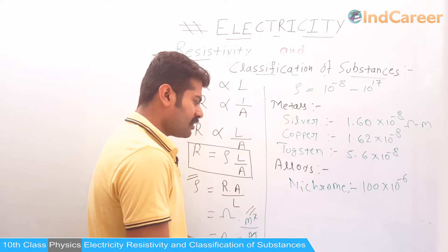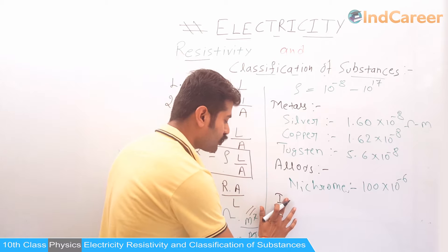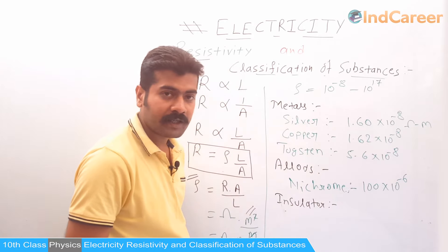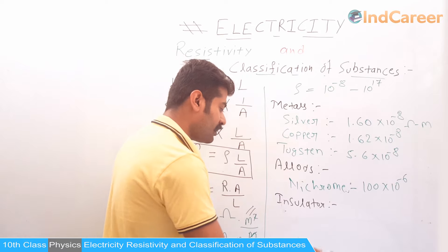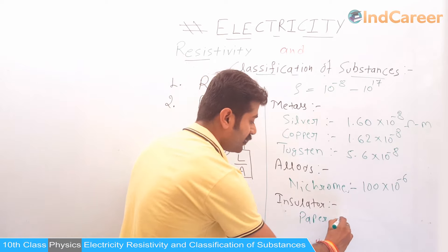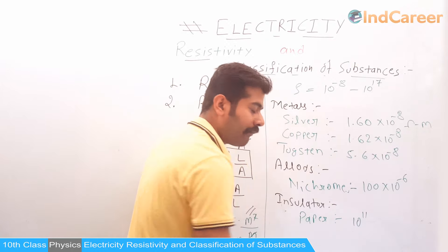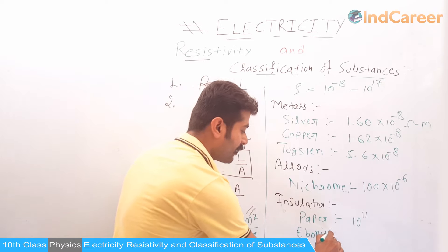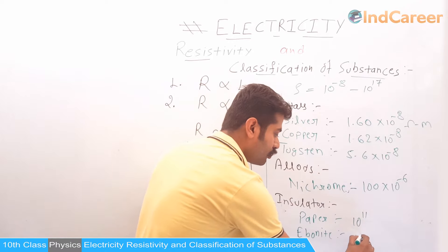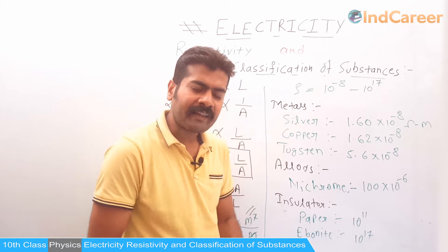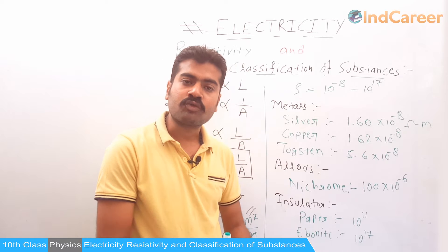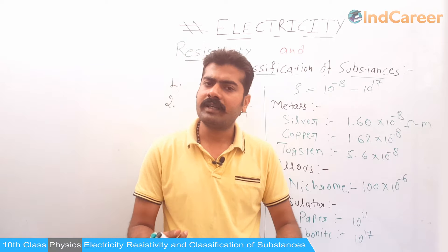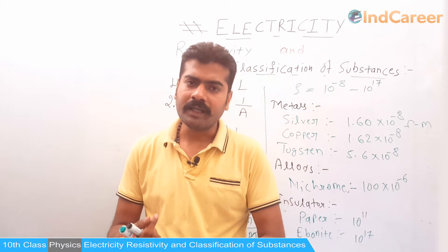The last category is insulators. The values of resistivity for insulators are quite high. For example, dry paper has a resistivity of the order of 10 to the power 11. The highest resistivity material we know is ebonite, which looks like glass, with resistivity in the range of 10 to the power 17. Most non-metals are insulators because they resist all values of current. In the next video, we will start the heating effects of current and Joule's law.